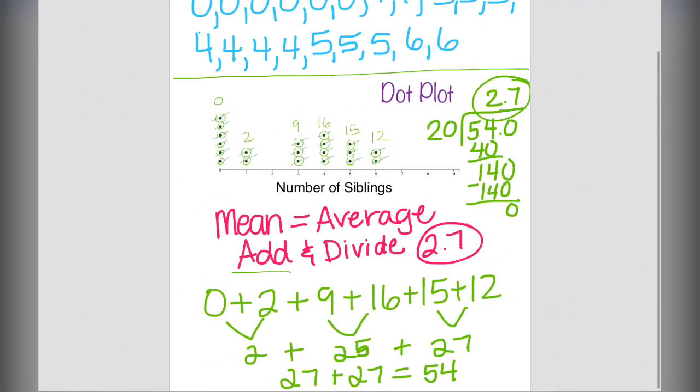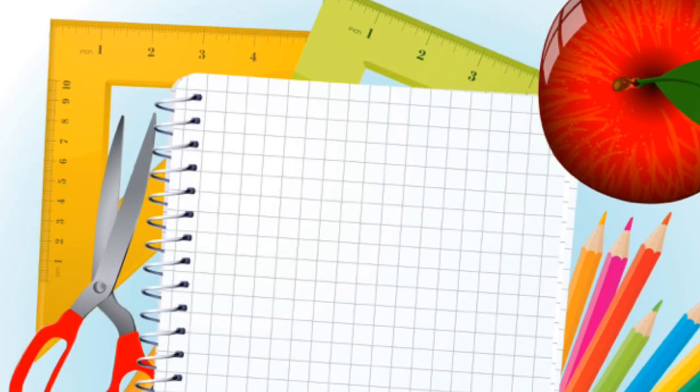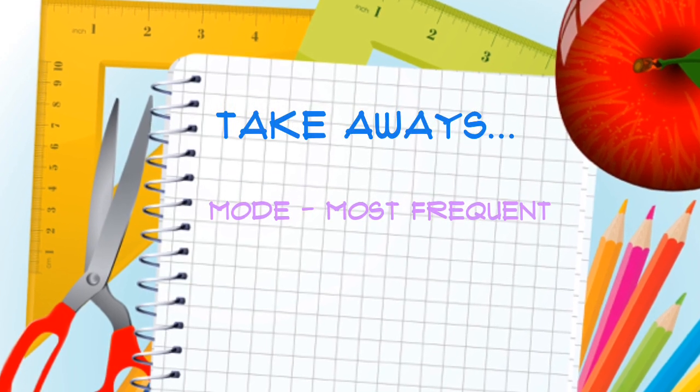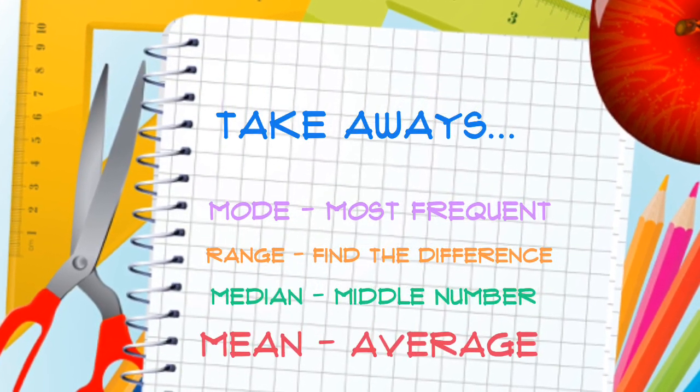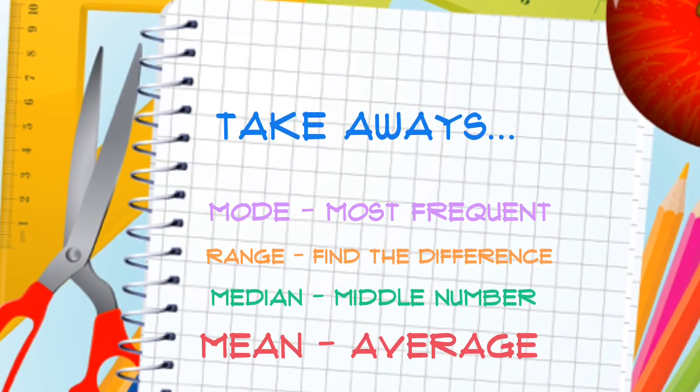So today's takeaways, we need to remember mode is the most frequent, range is to find the difference, median is the middle number, and mean is the average. Thank you for watching.